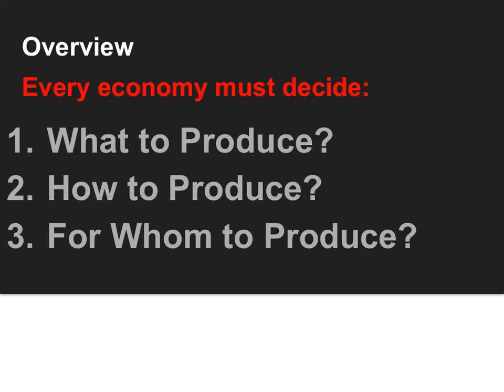Now depending on the economic system, if this were a market system, then the markets are what decide what to produce, how to produce, and for whom to produce. In a command-style economy, then it's the government or governmental agency that's going to make the decision on all of these questions.